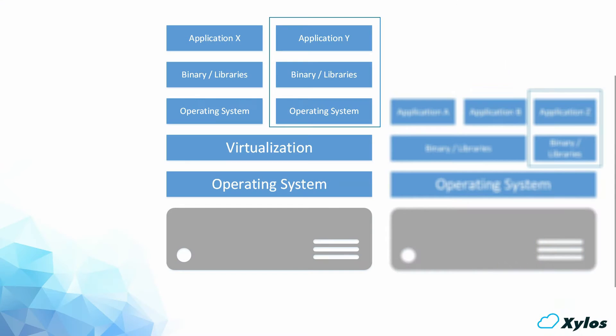When looking towards virtualization, what we have is hardware, a host, on top of that a host operating system and a virtualization layer. From there, we have multiple virtual machines, each with its own guest operating system, binaries, libraries, and the application. As a whole, it's kind of bloated. Indeed, every virtual machine is running a full operating system.